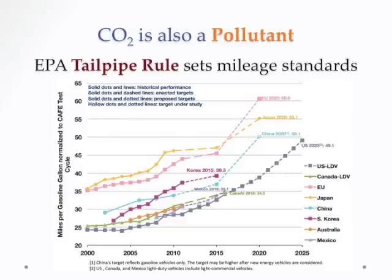The EPA has taken the position that CO2 is a pollutant. It's not a typical pollutant — it doesn't do direct harm the way sulfur dioxide, nitrogen oxide, or ozone do — but it is a pollutant in the sense that it causes damage to our climate and to human health indirectly. Therefore, in order to curtail CO2 emissions, the EPA has a tailpipe rule which basically sets mileage standards — specifying how much CO2 emission a car can emit per mile. We'll look at this quite a bit in the next section of the course, but it's a different approach to looking at CO2 as a pollutant.